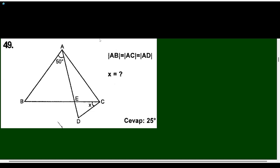We are given that AB equals AC equals AD, all equal to A. From here we know that this angle will be alpha and this angle will also be alpha. And if these angles are equal, this angle — the angle ADC — will be x plus alpha. So from here we know that this angle will be pi minus 2 times (x plus alpha).